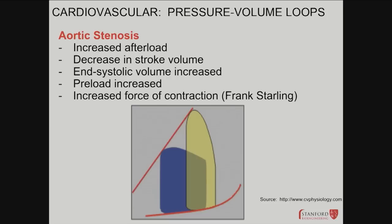Next, aortic stenosis. The aorta pumps blood from the left ventricle to the body. If the left ventricle has a harder time pumping because the aortic valve is thick or diseased in a stenotic state, what happens to afterload? It increases — because it's harder to pump blood out through a stenotic valve, not easier. We already know that when afterload increases, your PV loop thins and rises. You use the same three concepts — preload, afterload, and contractility — as independent variables to understand these relationships.